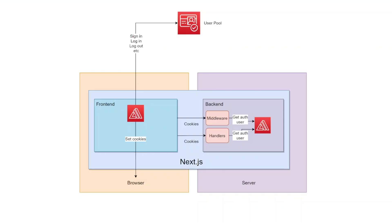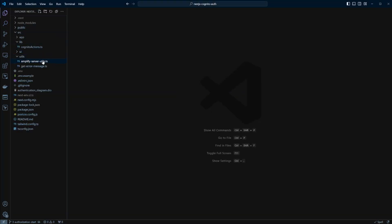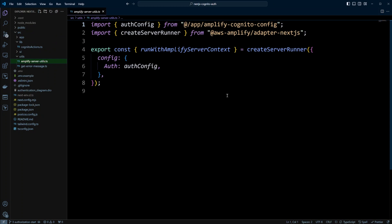Let's do a little refresher and take a look at the diagram. Middleware in Next.js runs on the server side. The client passes cookies to the server so the middleware knows about the authenticated user. Before we create the middleware, we're going to use the Amplify library to get that authenticated user. Let's go to the utils/amplify-server-utils.ts file that we created earlier. Amplify provides Next.js adapters so we can call Amplify methods in the server context without dealing with cookies manually.